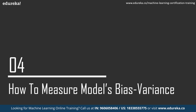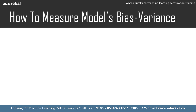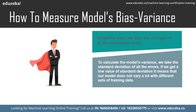Now let me tell you how to measure a model's bias and variance. If we do K-fold cross validation, we get K different estimation errors. In an ideal situation these errors would sum to zero, but that is highly unlikely. To get the bias, we take the average of all estimation errors — the model's accuracy is directly proportional to the bias calculated. To calculate variance, we take the standard deviation of all errors. A low standard deviation means the model does not vary much with different training sets. The focus should be to maintain a balance between bias and variance by minimizing variance and controlling bias.